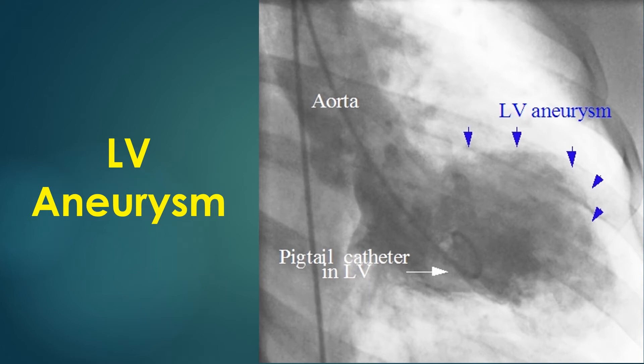A true aneurysm can cause arrhythmias due to the viable tissue in the border zone with varying refractory periods, which initiate re-entrant arrhythmias.